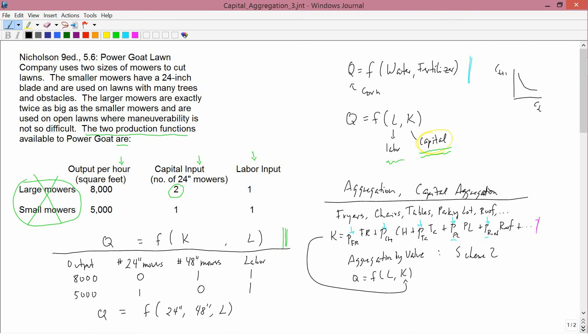And in any case, why over here would a 48-inch mower be twice the 24-inch mowers? Why are you deciding to aggregate by the length of the blade? I'm not saying that's a particularly bad way, but why not aggregate by the width of the mower, its horsepower, some other characteristic of it. Why is it the length of the blade?